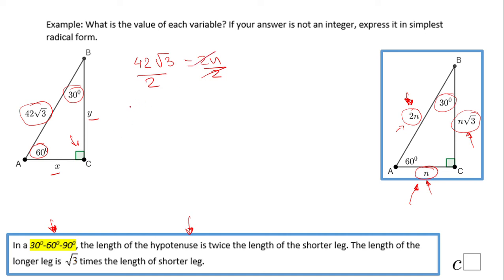And we have n equals 21 square root of 3. And if you notice, this n is nothing else than this leg on the opposite side of the 30 degrees. So in our case, the x will be 21 square root of 3.